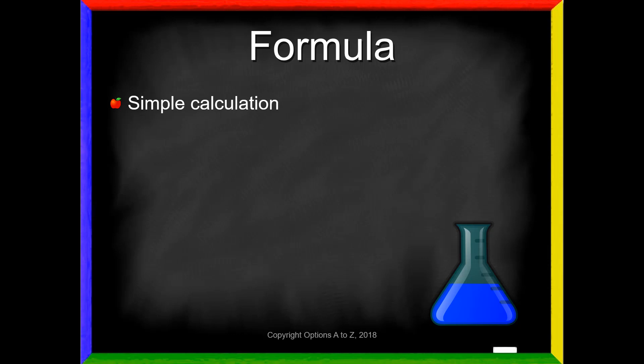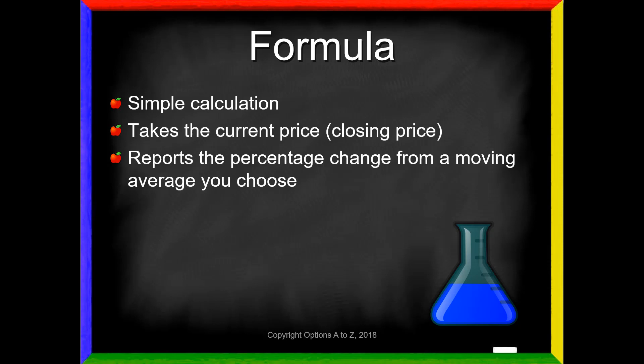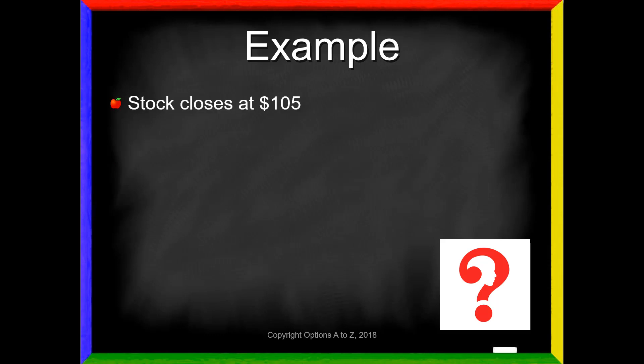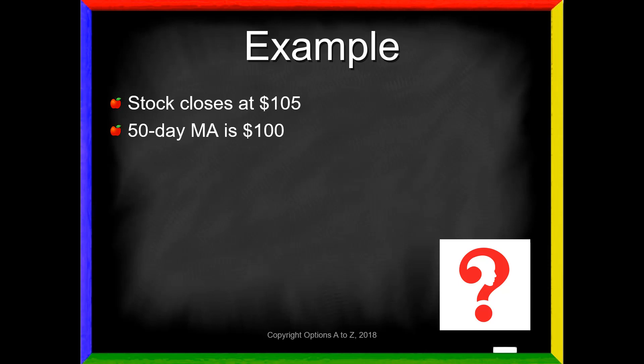All the index does is take the current stock price — or the closing price if the markets are closed — and report the percentage change of that closing price from a moving average that you choose. For example, let's say the stock closes at 105, or is currently trading at 105 if the market's open, and you've chosen the 50-day moving average currently at 100. The disparity index will show 5% because the current stock price is 5% above that moving average.